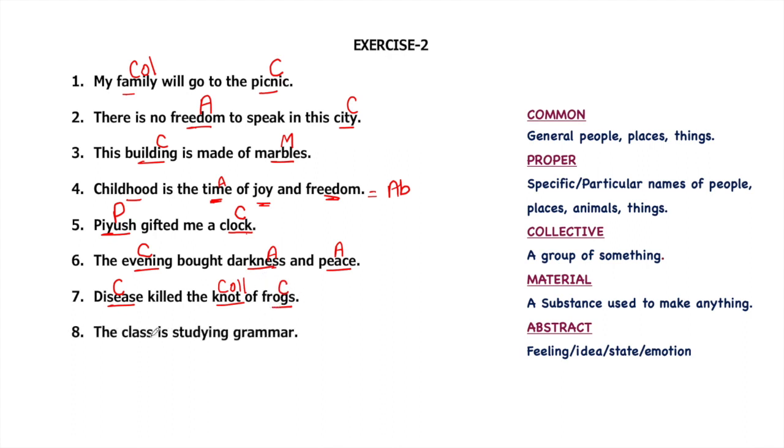The class is studying grammar. Class is a group of students, it will be collective noun. But grammar is a common noun because grammar can be of any language. The teacher gave punishment to all. Teacher, a common noun. Punishment is a state of being punished, so it's an abstract noun.